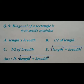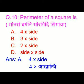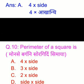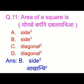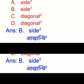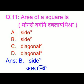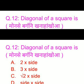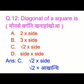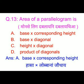option A. The perimeter of a square — we have four options and the right answer is option A: 4 into side. The diagonal of a square — we have four options and the right answer is option B: root 2 into side.